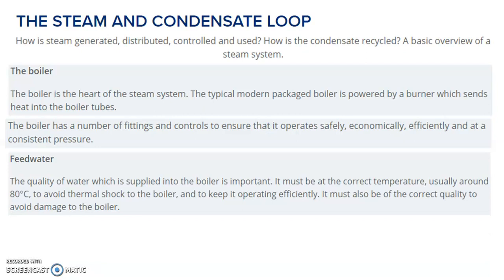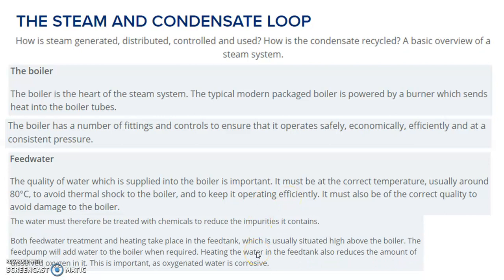Next is feed water. The quality of water supplied into the boiler is important. It must be at the correct temperature, usually around 80 degrees centigrade, to avoid thermal shock to the boiler and to keep it operating efficiently. It must also be the correct quality to avoid damage to the boiler. Feed water must therefore be treated with chemicals to reduce impurities. Both feed water treatment and heating take place in the feed tank, which is usually situated high above the boiler. The feed pump adds water to the boiler when required. Heating water in the feed tank also reduces the amount of dissolved oxygen, which is important as oxygenated water causes corrosion.